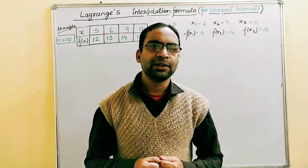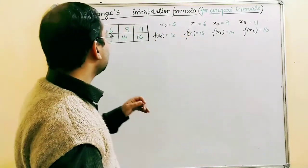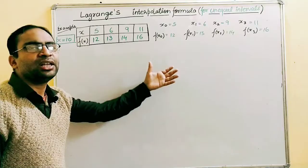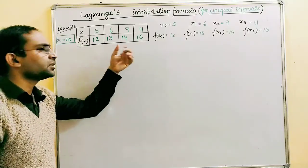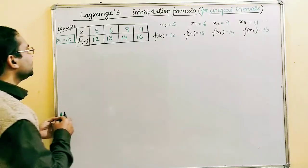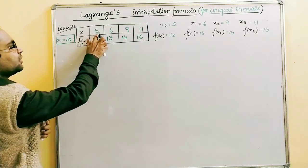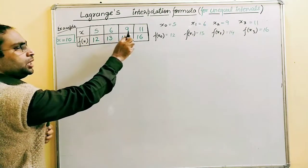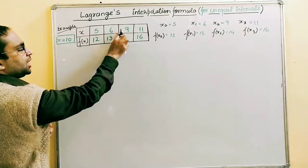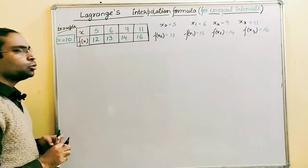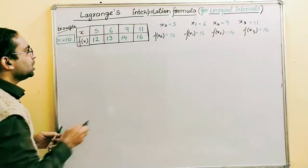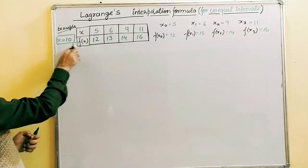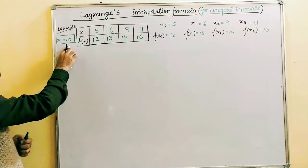Let's talk about the Lagrangian interpolation formula today. I have taken an example directly, and with the help of this example I'll show you how we can create the formula. The question gives values of x as 5, 6, 9, and 11 — these are unequally spaced values (gaps of 1, 3, and 2). The corresponding f(x) values are 12, 13, 14, and 16. We have to evaluate f(x) when x = 10.